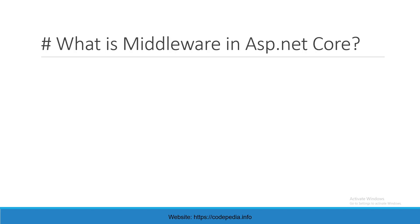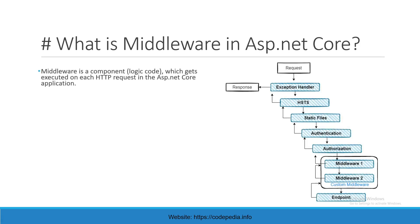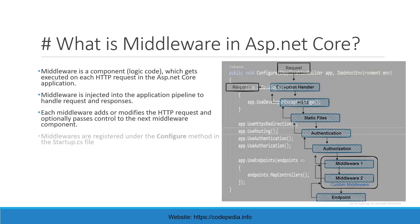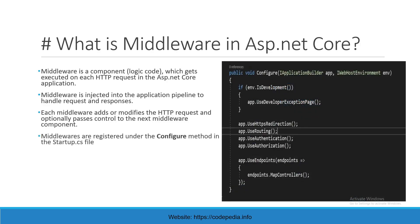Let's take the first question: What is middleware in ASP.NET Core? This is one of the most commonly asked questions in every .NET Core interview. Middleware is a component or logic code which gets executed on each HTTP request in the ASP.NET Core application. Middleware is injected into the application pipeline to handle requests and responses. Each middleware adds or modifies the HTTP request and optionally passes control to the next middleware component.